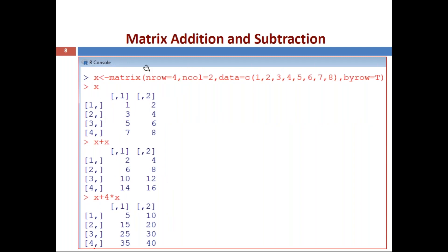For addition, we can add x to itself: the command is x + x. Both have dimension 4×2, satisfying the same-dimension condition. Each element in the first matrix is added to the corresponding element in the second matrix at the same position. So 1+1=2, 2+2=4, 3+3=6, and so on up to 8+8=16.